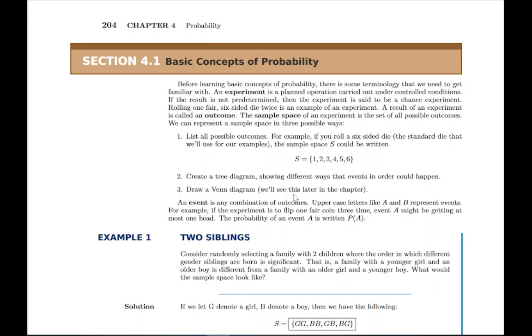We have each outcome in the sample space, and then we can create events, which could be one outcome or several. For example, if you define the event rolling a one, that would correspond to one outcome. But if you said rolling an odd number, that would correspond to three outcomes: the one, the three, and the five. So an event could be one outcome or multiple ones combined together.